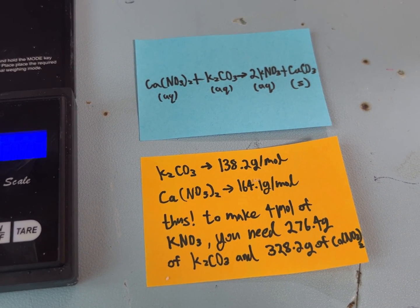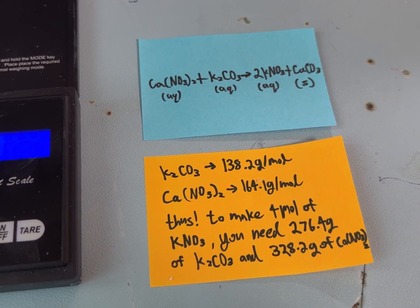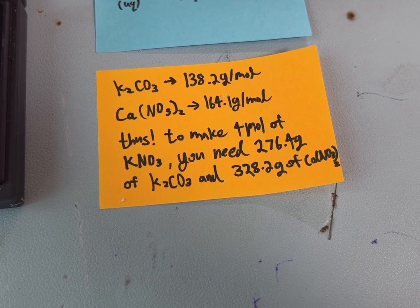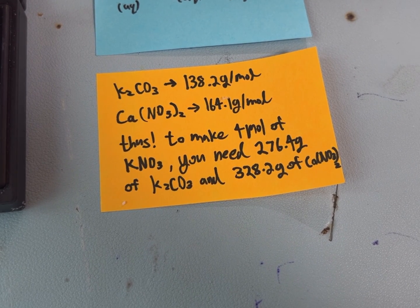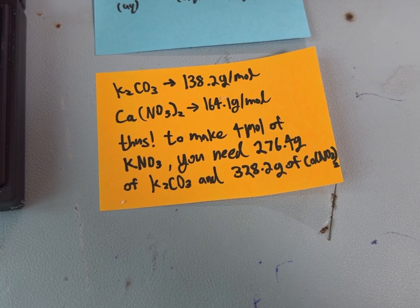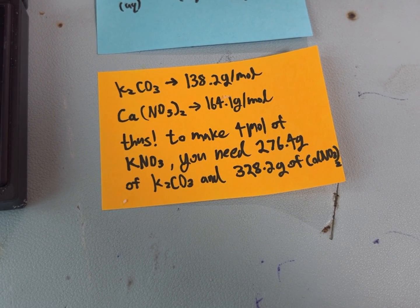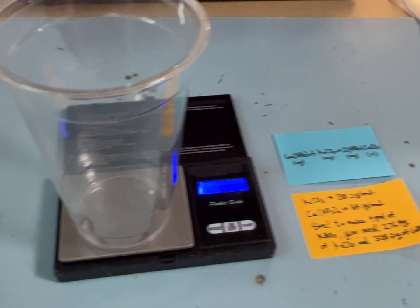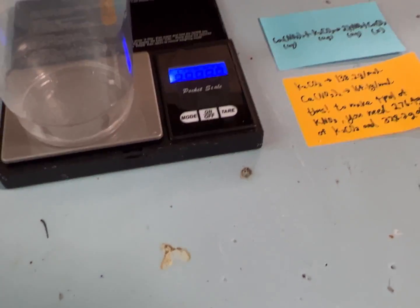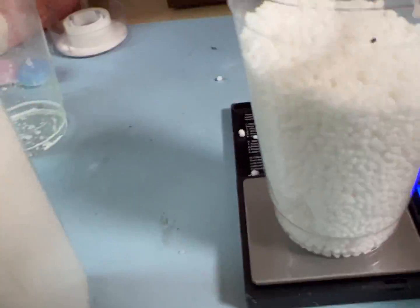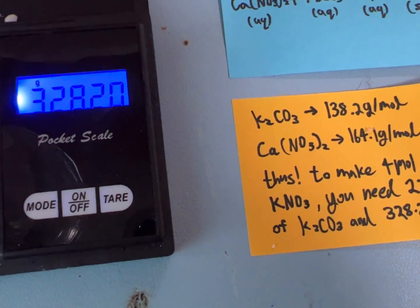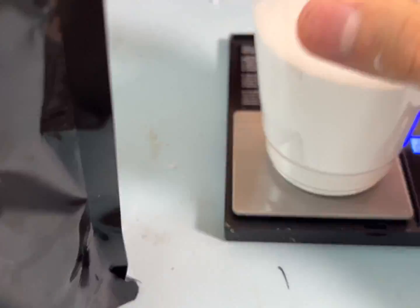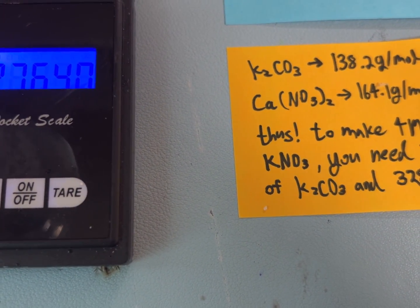If you look at the equation on the blue paper, you can see that one mole of calcium nitrate and one mole of potassium carbonate synthesizes into two moles of potassium nitrate. On the orange paper, one mole of potassium carbonate is 138.2 grams and one mole of calcium nitrate is 164.1 grams. So to make four moles of potassium nitrate, I'll need 276.4 grams of potassium carbonate and 328.2 grams of calcium nitrate. Let's weigh out 328.2 grams of calcium nitrate, and then 276.4 grams of potassium carbonate.